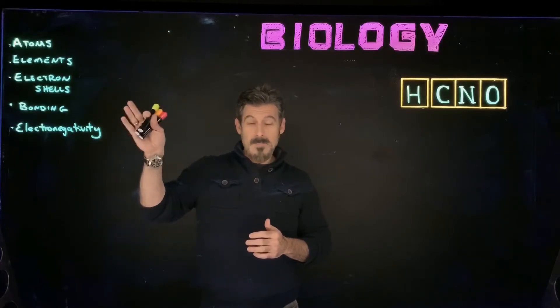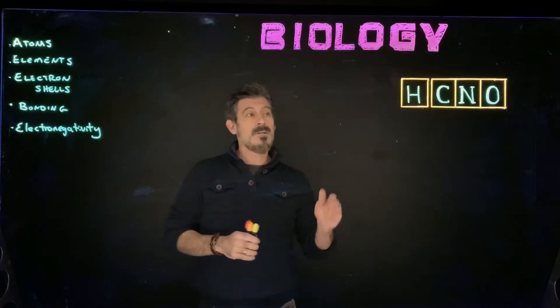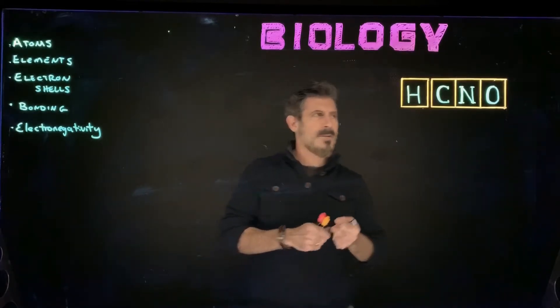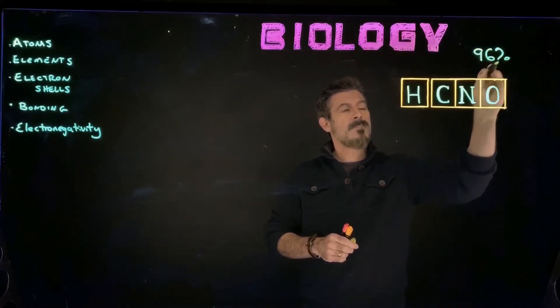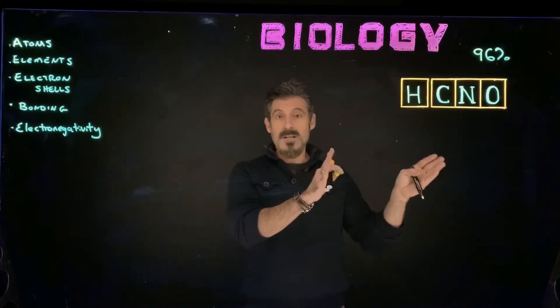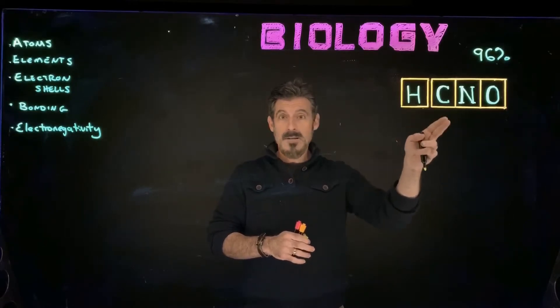So we're going to look at atoms and a really simplistic atomic structure for a few elements. And the elements we're looking at here are the elements that make up most of the biological molecules. Probably about 96% of the biological molecules are made up primarily of just these four elements: hydrogen, carbon, nitrogen, and oxygen.